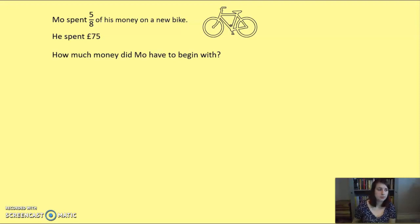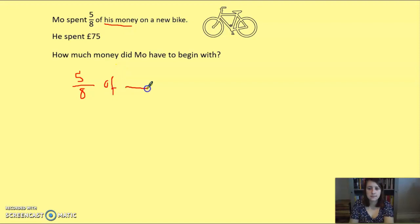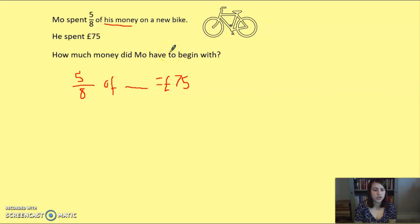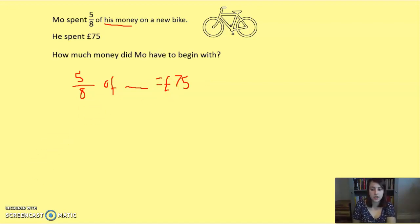Now we're going to look at some word problems — it's exactly the same as what we've just done but written differently. Mo spent five eighths of his money on a new bike. It doesn't tell you how much money he had, just that he spent five eighths of that mystery amount and spent 75 pounds. So you need to work out which numbers it's giving you and in what order. Five eighths of his money was 75 pounds — the question asks how much money he had to begin with. Pause the video and have a good go.